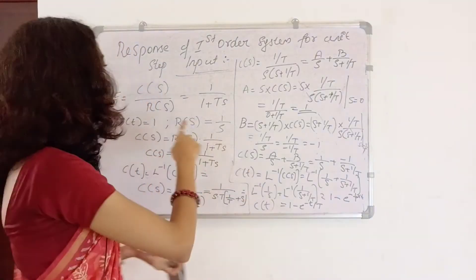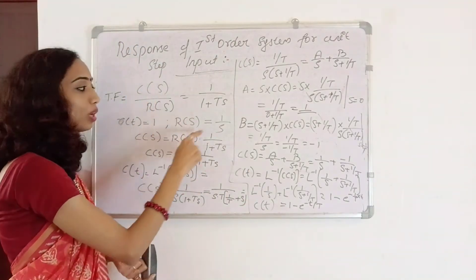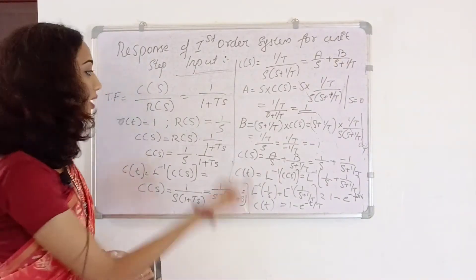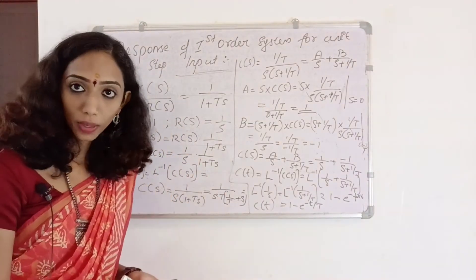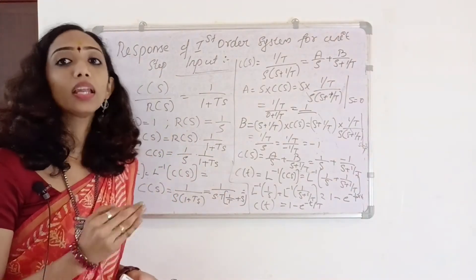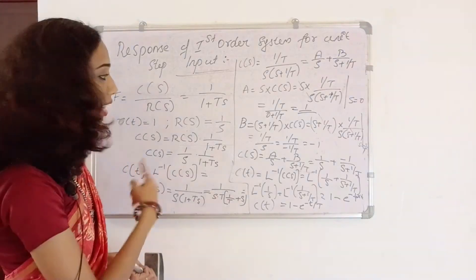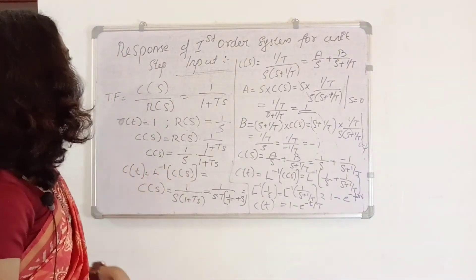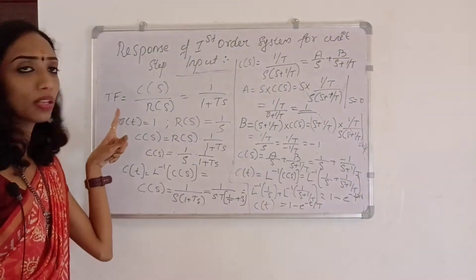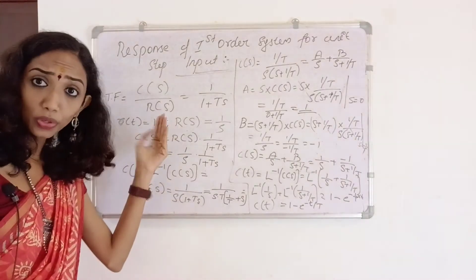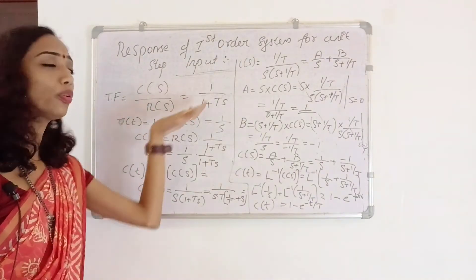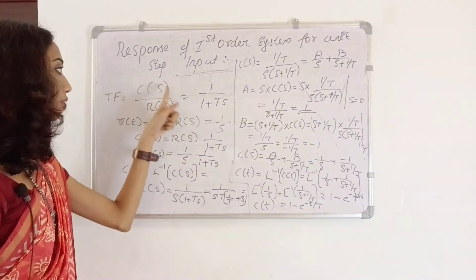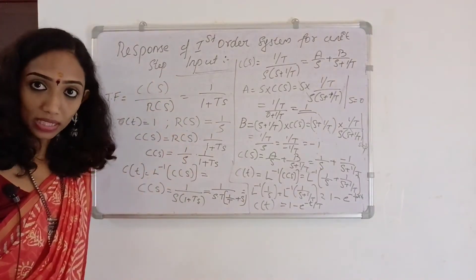For step input, R of S equals 1 by S. For ramp input, R of S equals 1 by S squared. The transfer function is defined as Laplace transform of output to input. That is C of S by R of S equals 1 by (1 plus T·S).